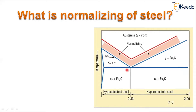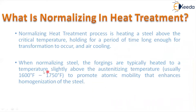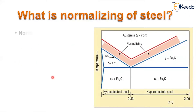For different alloys the temperature varies, but for all alloys the range is above the upper critical temperature line. When the material reaches the upper critical temperature, you add 50 degrees centigrade above that. So the overall range for normalizing is 1600°F to 1750°F.